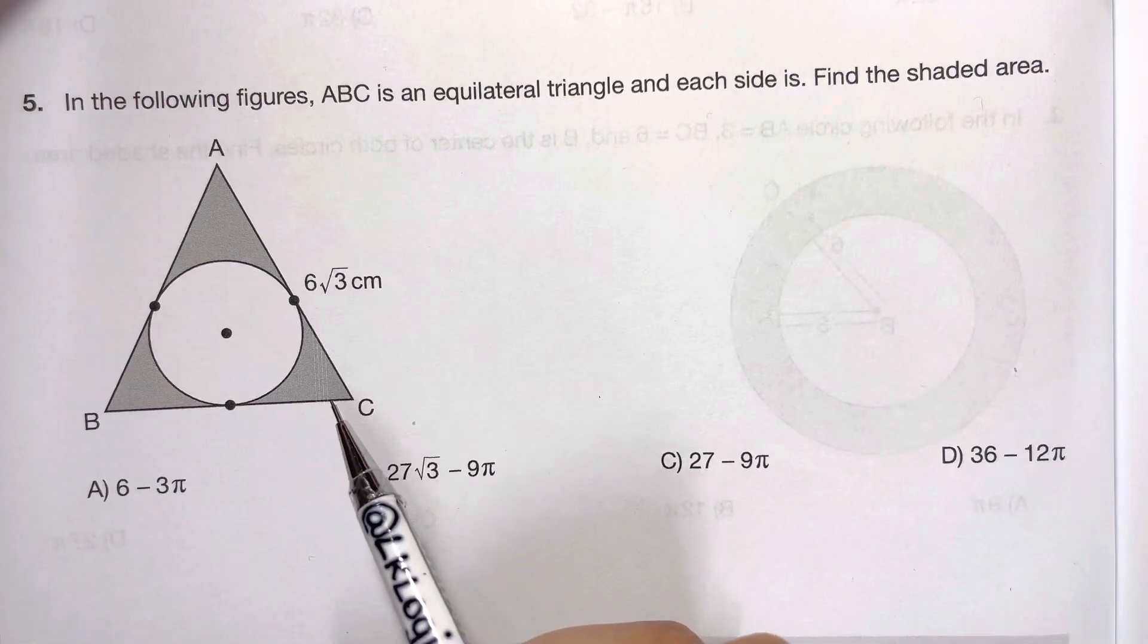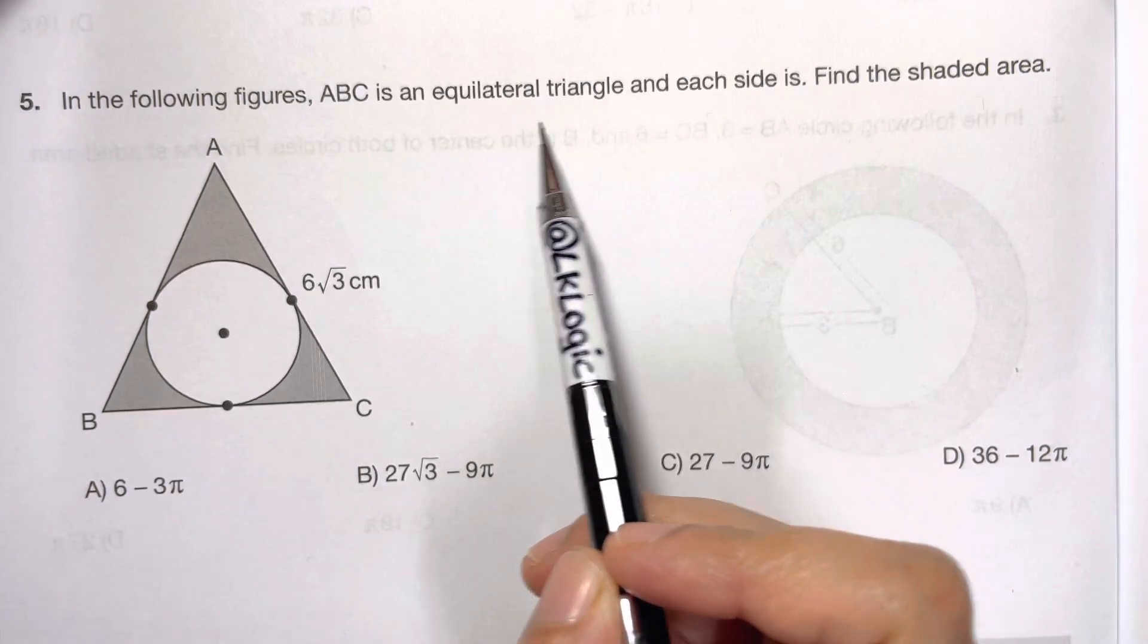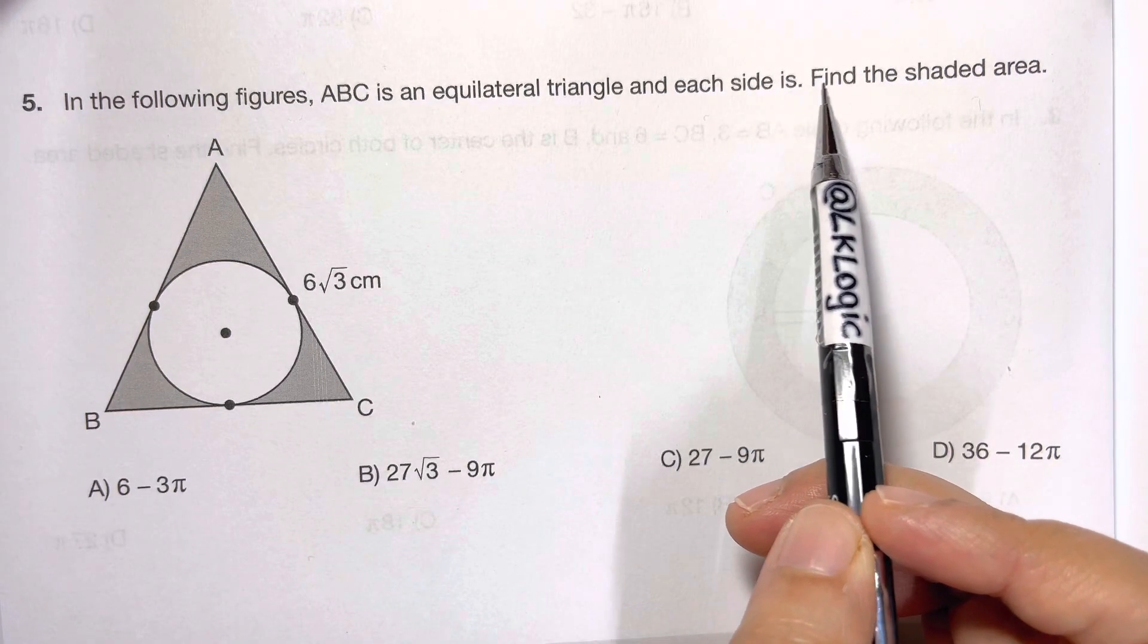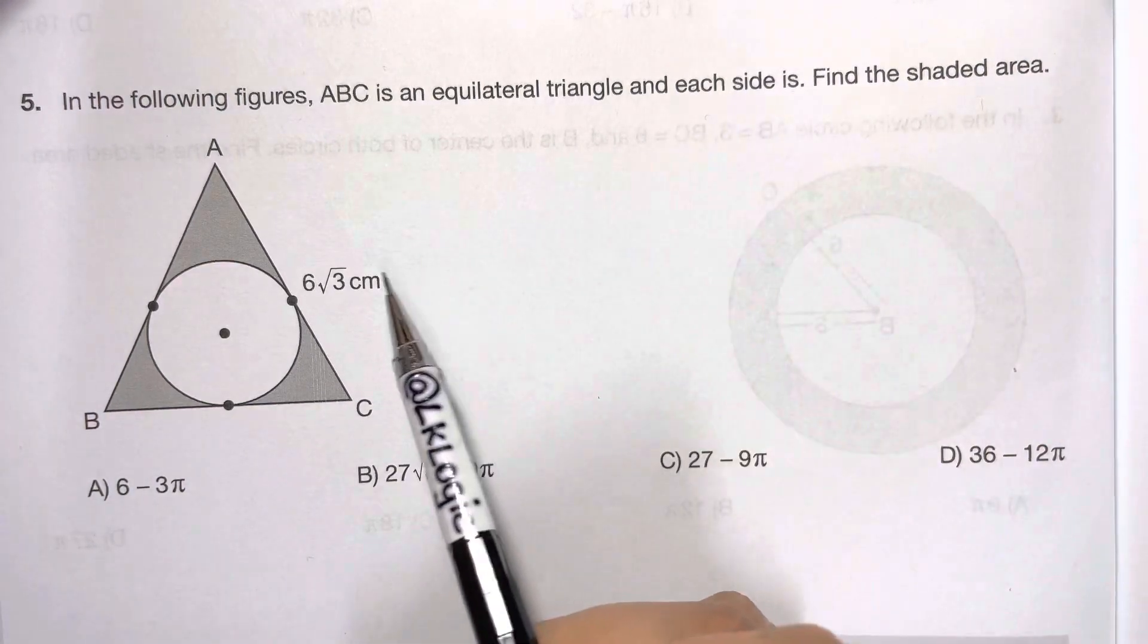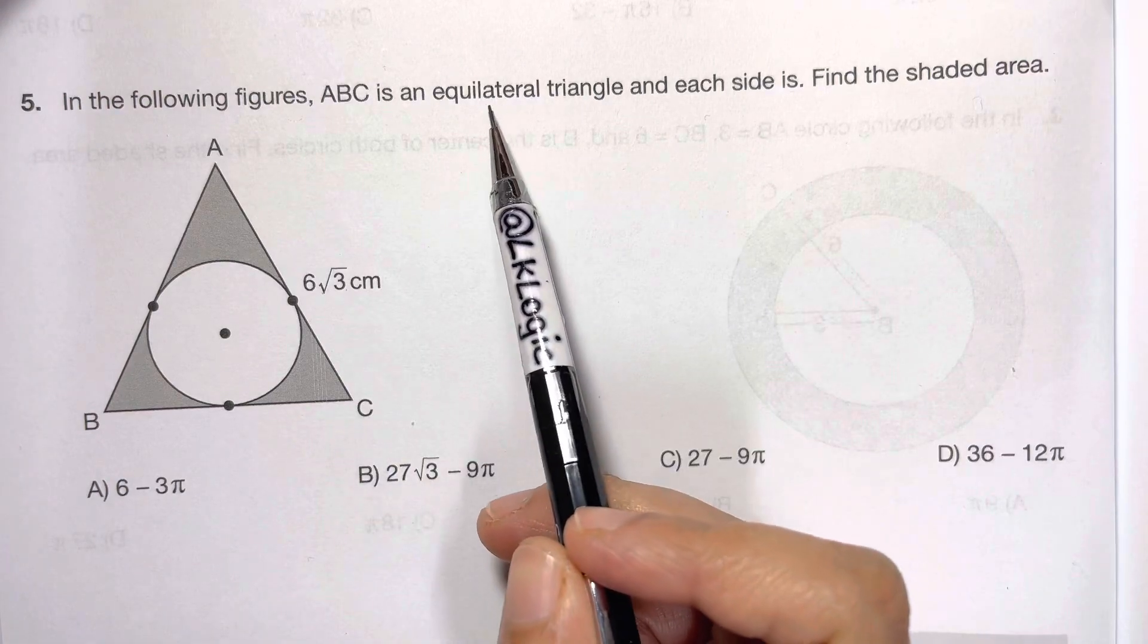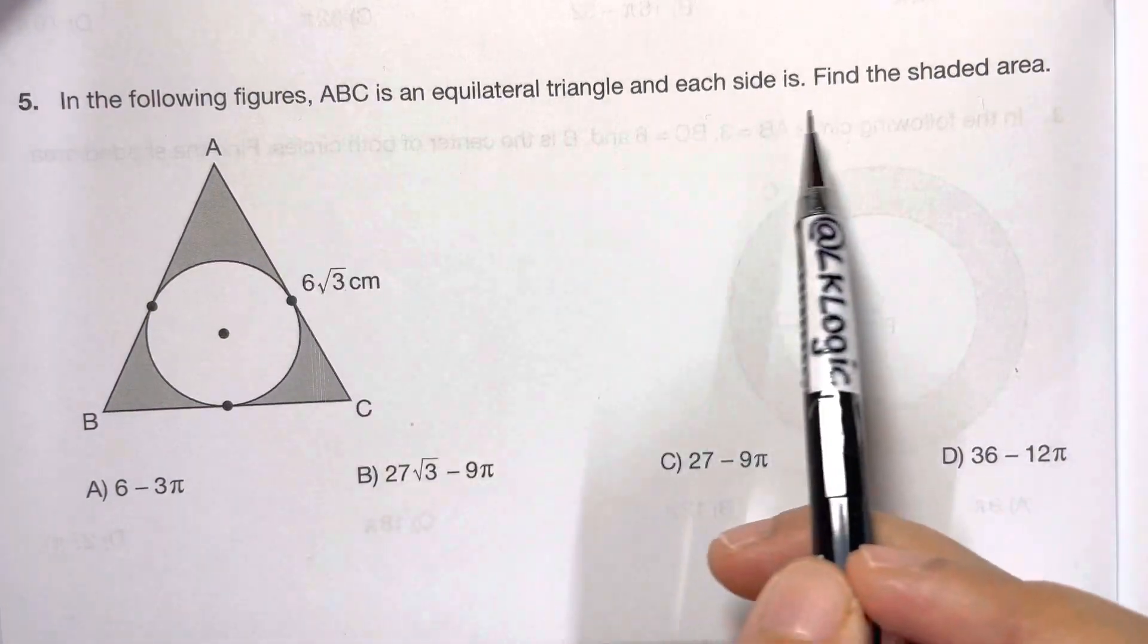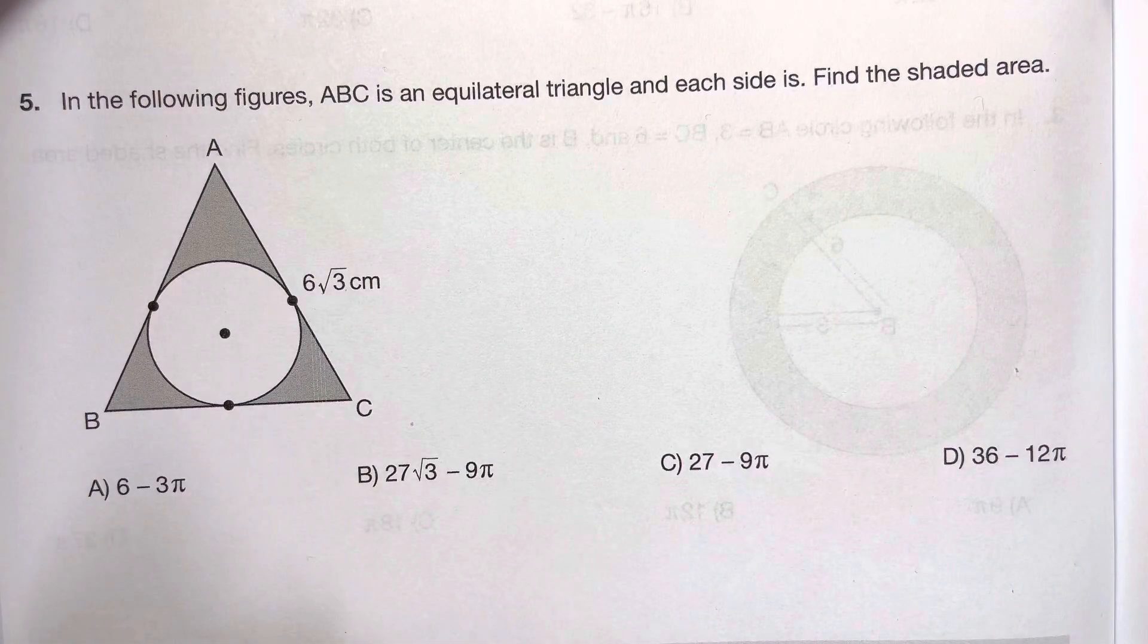Hi everyone, in this video we're going to solve this question. In the following figure, ABC is an equilateral triangle and each side is 6√3 cm. Find the shaded area. So all sides are equal, now we just have to find what's the shaded area.